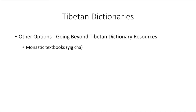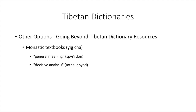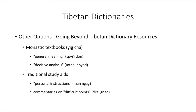One of the most readily accessible genres of literature for familiarization with the vocabulary of a topic is the monastic textbooks genre, or yik cha. They often contain pairs of texts such as general meaning presentations and decisive analysis commentaries on a subject. Many of these exist in searchable electronic form and can be easily used to locate term usage and contextual explanations. Similarly, for many subjects in Tibetan studies, there are authors who have composed commentaries explaining difficult words in an authoritative root text — such commentaries might be called personal instructions (mengak) or commentaries on difficult points (gane) — and will often contain longer explanations of an unusual term or phrase.